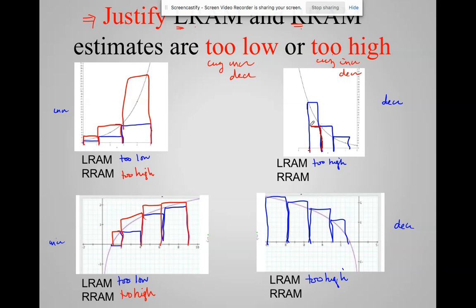You're decreasing RRAM. You're going to start at the right end of the endpoint. First interval. Go to the right side. So for decreasing, RRAM, right, is the opposite.